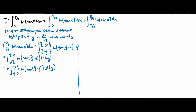Next we focus on the function tan(pi over 2 minus y). The tangent of pi over 2 minus y is equivalent to sine(pi over 2 minus y) over cosine(pi over 2 minus y). The next step is to use the trigonometric addition formula.